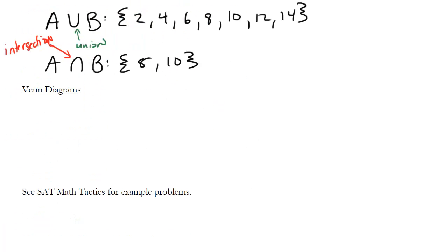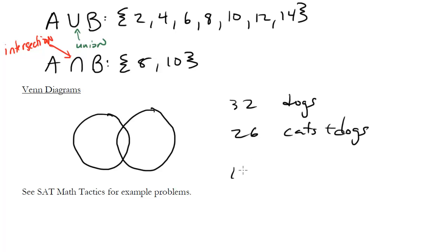Now one other kind of set question has to do with Venn diagrams. So a Venn diagram is just a graphical way of showing the relationships between collections of things. So one example you often see is something like this, so you've got two interlocking circles and they'll say something like 32 people have dogs and 26 people have cats and a dog and there are 100 total people so how many just have cats?